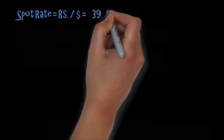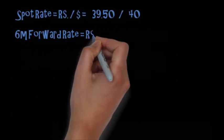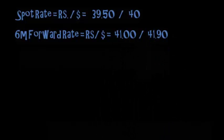For example, the exchange rate quoted, that is the spot rate, is 39.50 by 40, and the 6 month forward rate is 41 by 41.90.